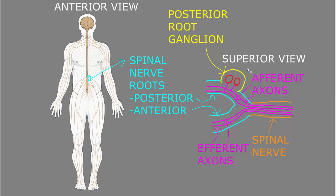We're looking at the spinal nerve from the top, the superior view. Each spinal nerve is formed from two roots: the anterior and posterior spinal nerve roots. The anterior is in the front and the posterior is in the back. The spinal nerve roots are attached to the spinal cord, then fuse together to become the spinal nerve, which passes through the spine out to the periphery.